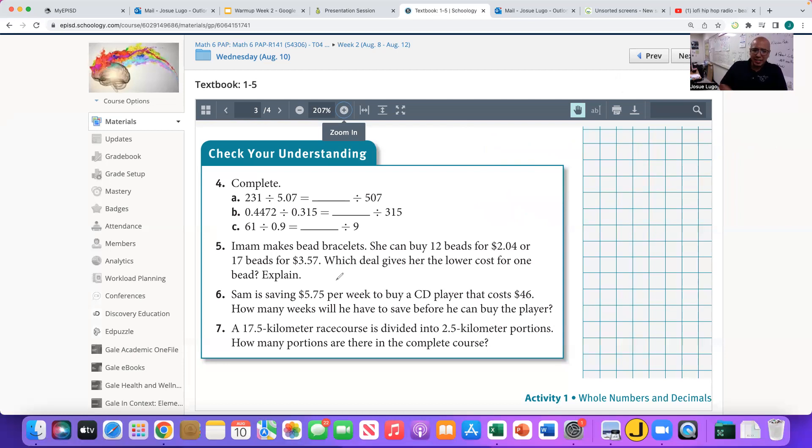Next, I do want to explain number five, and I'm just going to briefly explain this. It says, Imam makes bead bracelets. She can buy 12 beads for $2.04, or she can buy 17 beads for $3.57 at a different store. The question is, which is the better deal to give us a lower cost per bead? Well, ladies and gentlemen, notice what the question is asking. We want the cost per bead.